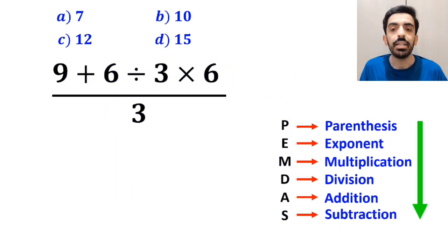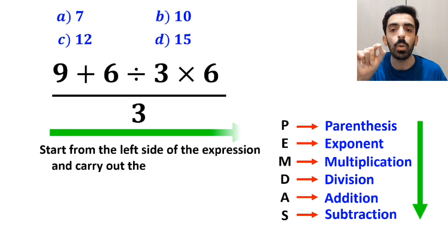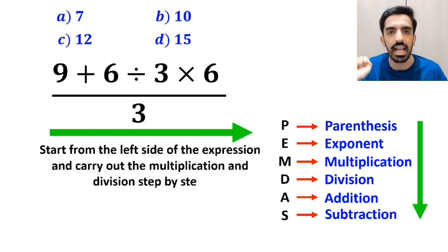In this case, the best thing to do is to start from the left side of the expression and carry out the multiplication and division step by step. So, first we go for the division between 6 and 3.